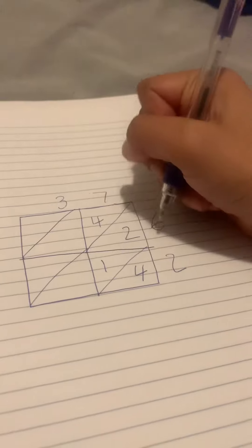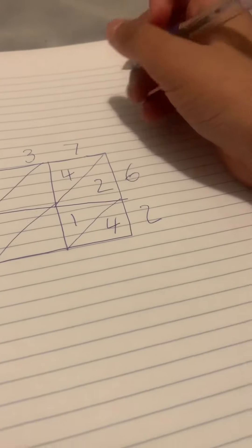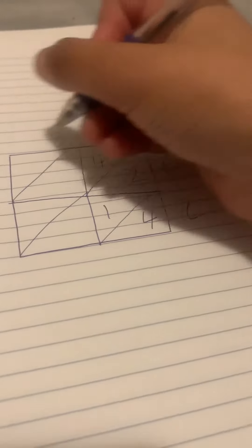Then you do what's 3 times 6, and 3 times 6 is 18, so you put the 1 up here and the 8 right here. Then you do 3 times 2 and that's 6, so you put the 0 up here and the 6 here.